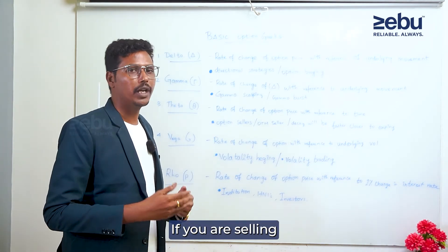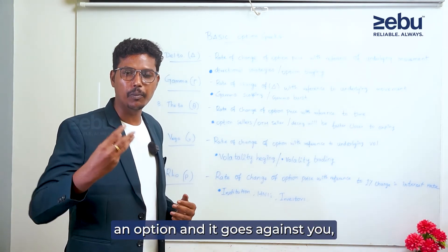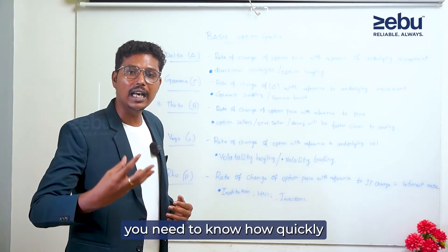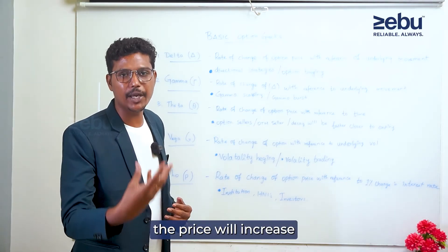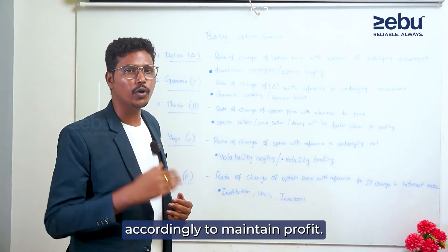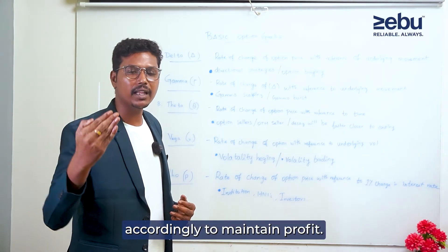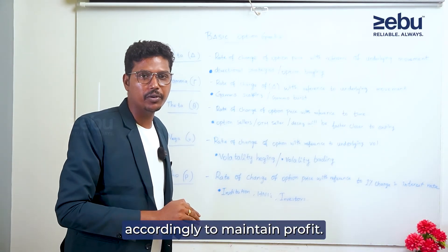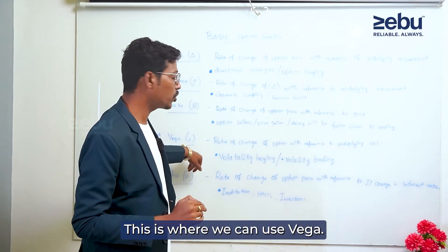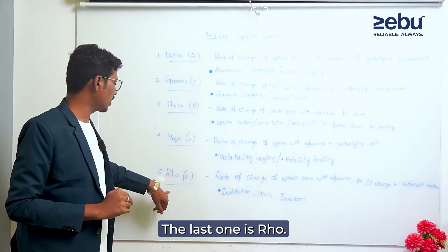How much is the option strategy affected? If you sell an option and you gain or stop, it will be as secure as the price. Then I will hedge — if I compensate for it, I will have a profit. But I will hedge. That is Vega.